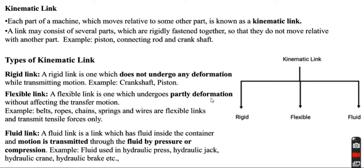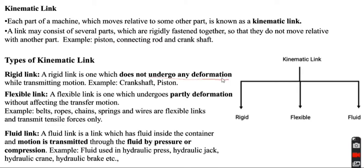What is a rigid link? A rigid link is one which does not undergo any deformation while transmitting motion. Examples include crankshaft and piston.